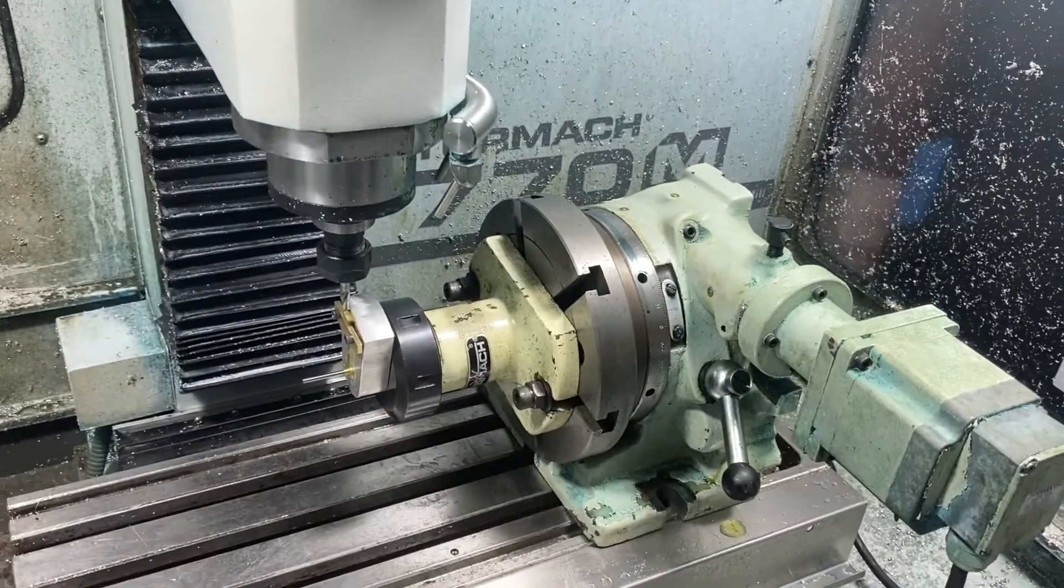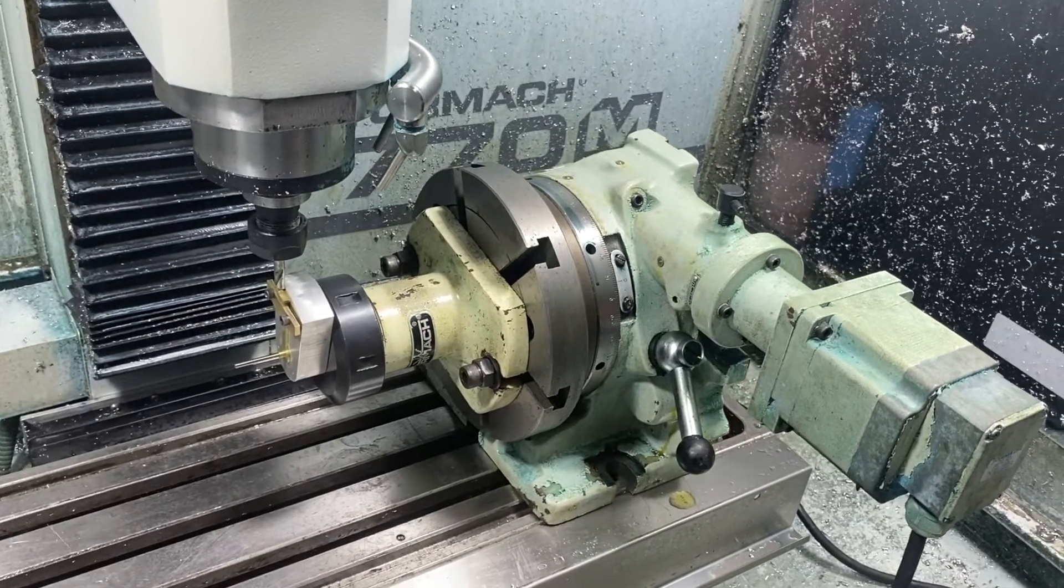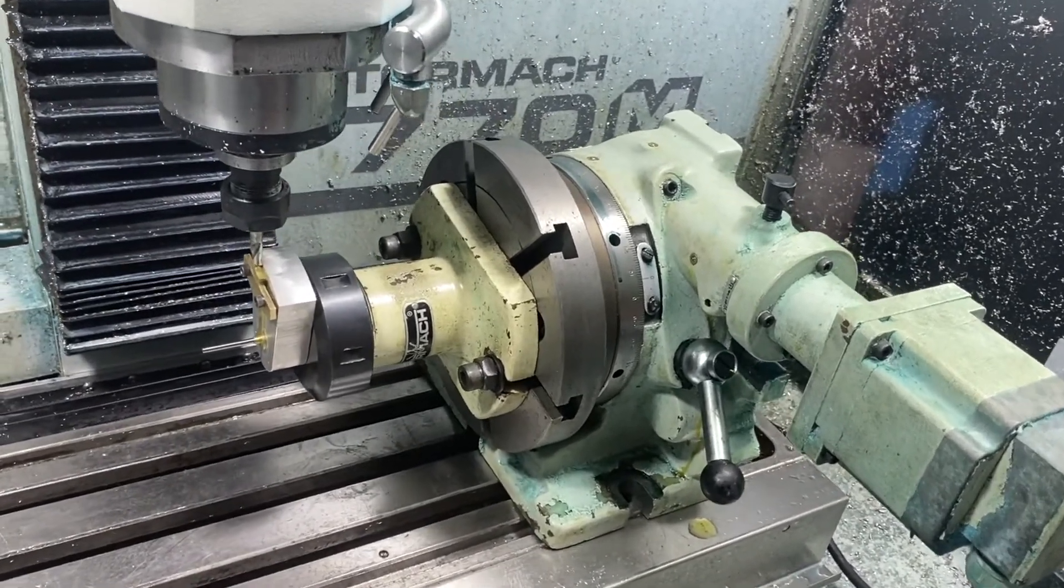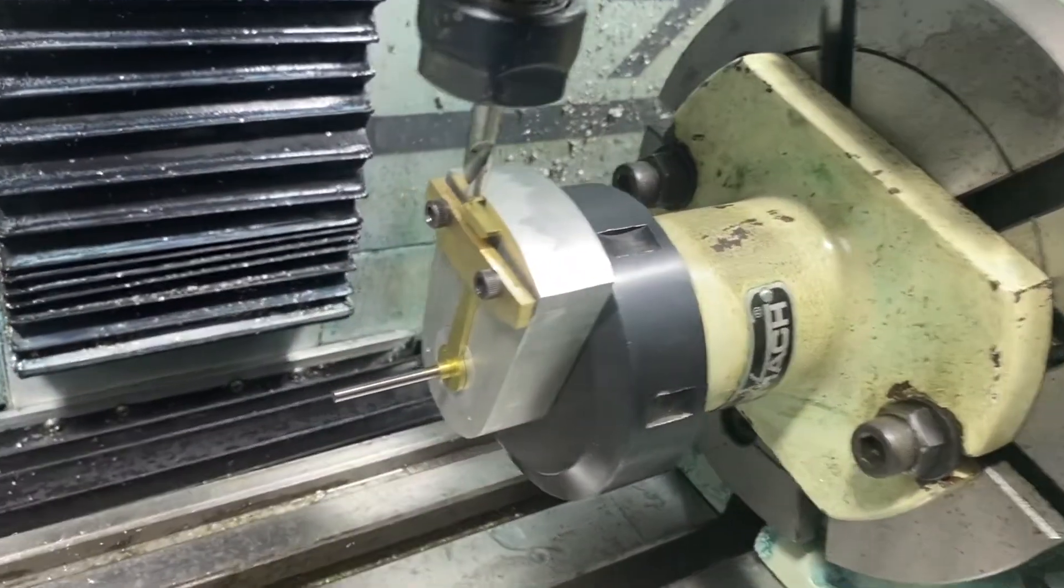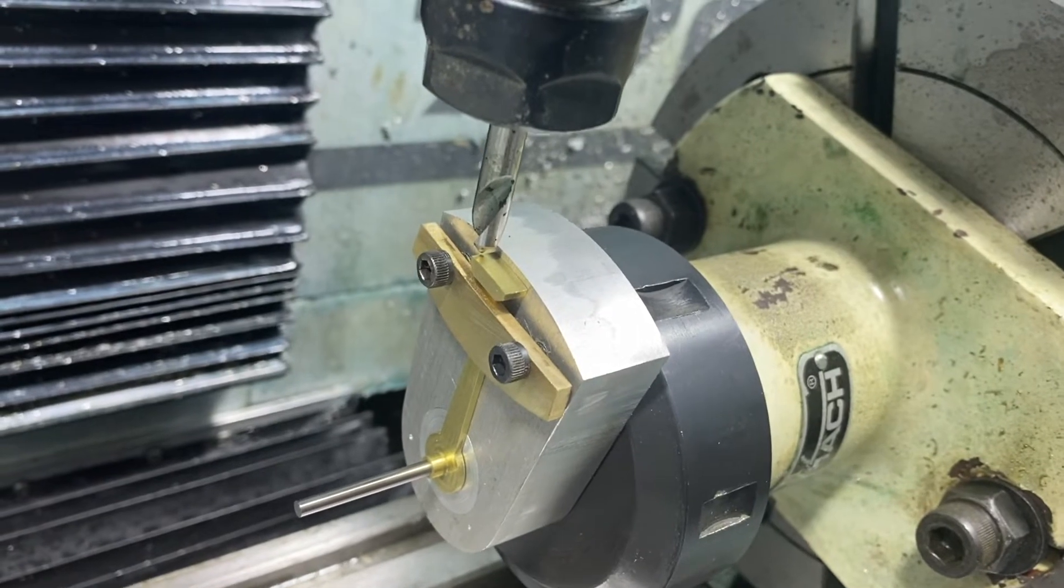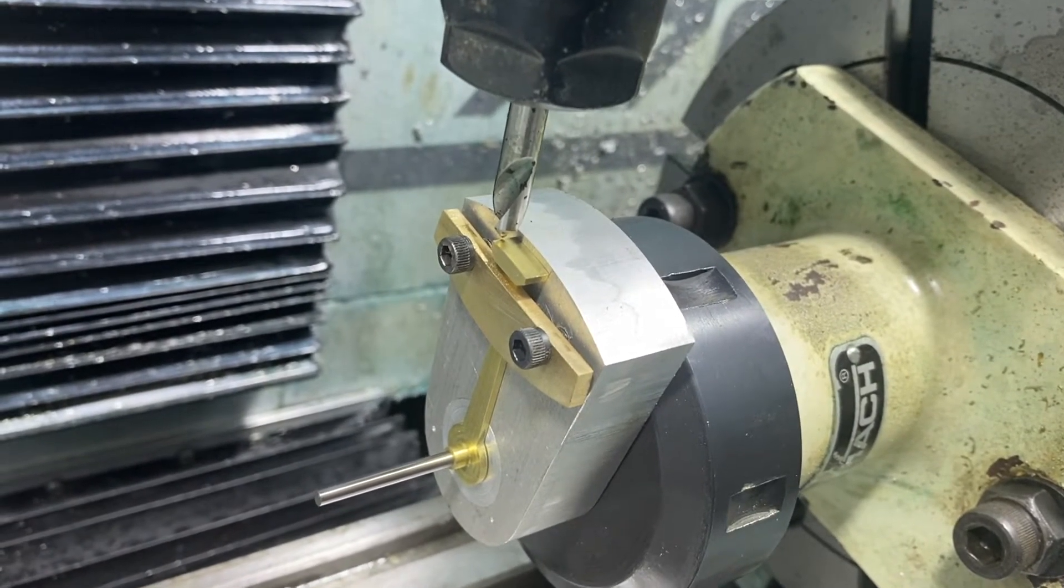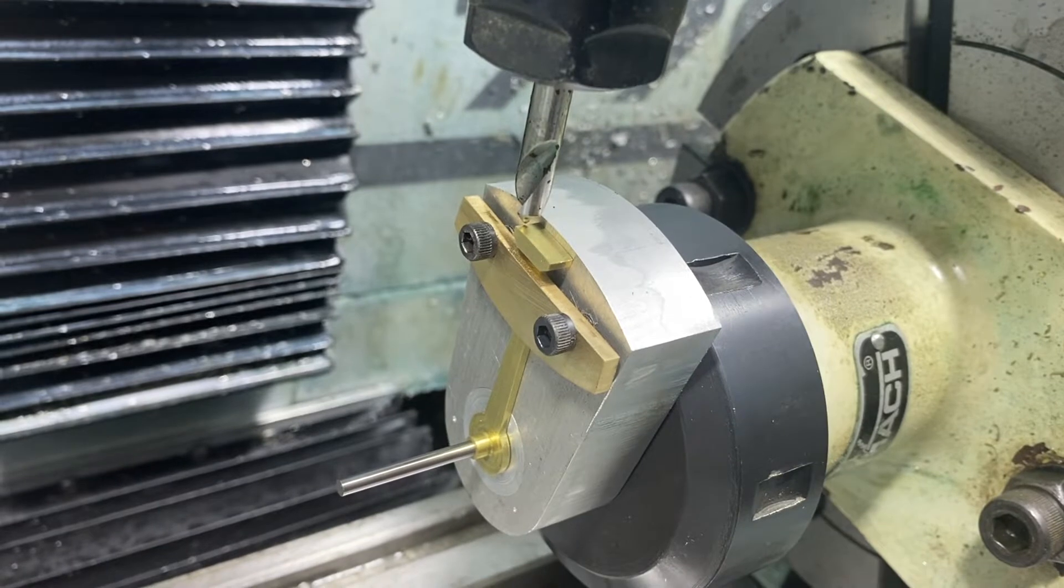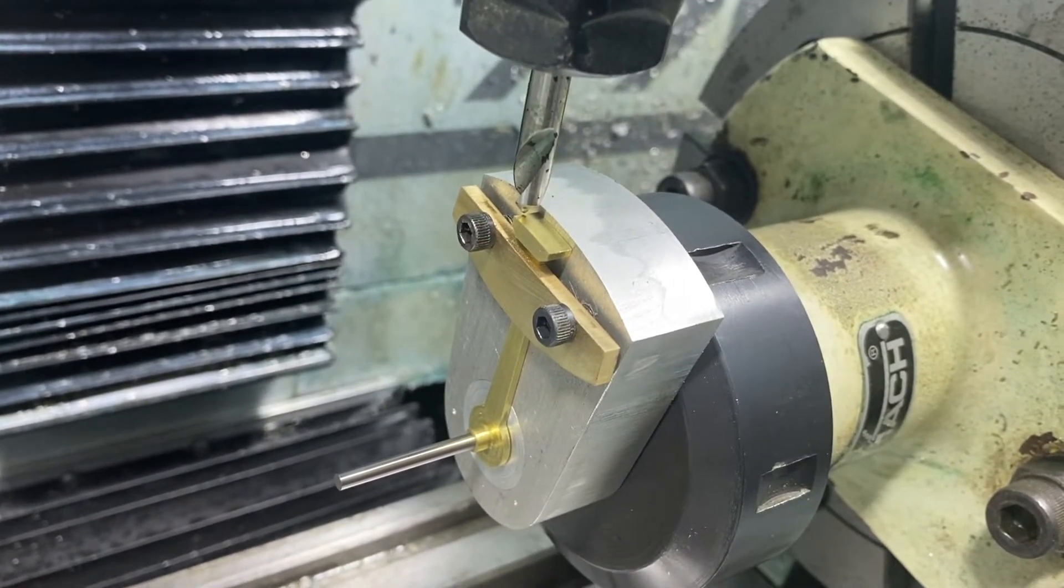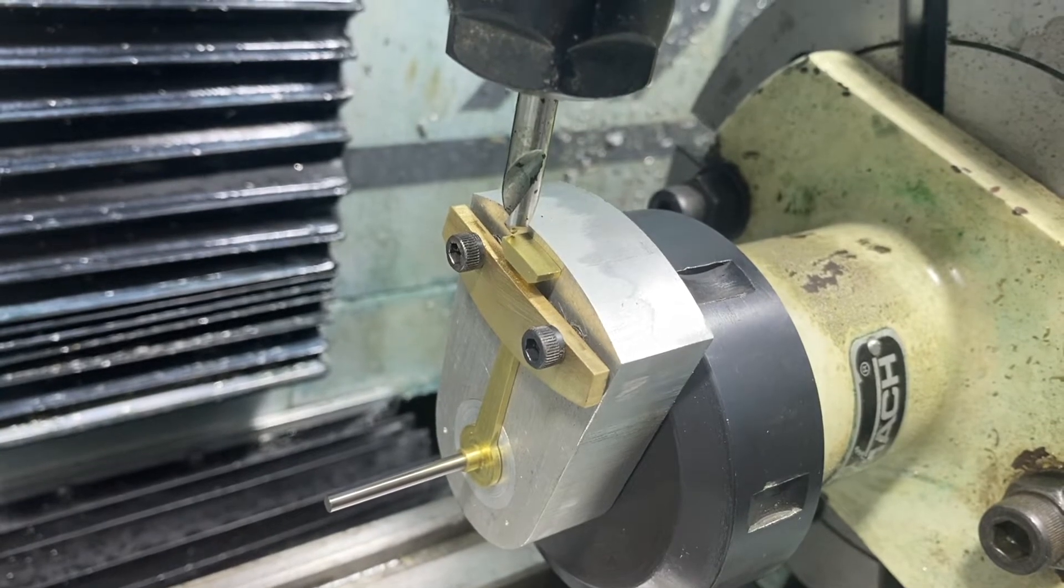After a lot of work, we've got this thing fixtured up. I put the fourth axis in the Tormac and built this fixture on the A-axis. It's a piece of aluminum block with a 0.125-inch hole in the center, and I was able to locate the A-axis on the dowel pin that's sticking out.